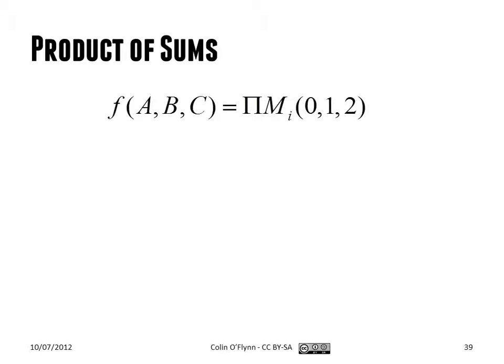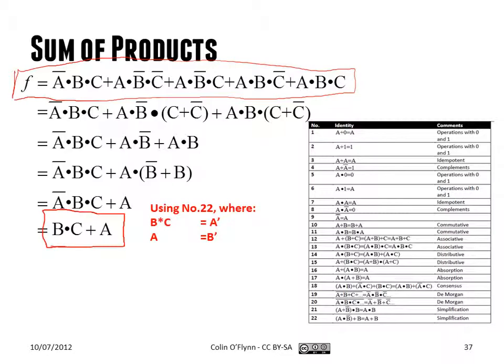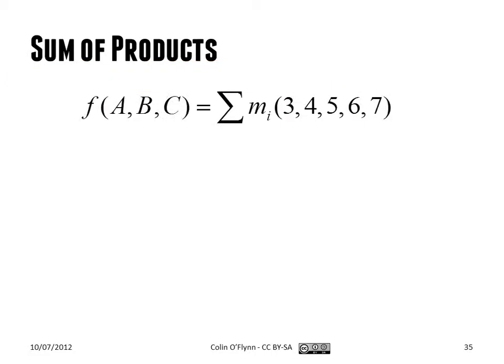When we write them down, we'll often use this simplified notation. The sum of products form, which is the first one we talked about, we'll use the summation notation. This, for example, is saying minterm 3, 4, 5, 6, 7. What this means is that in the truth table, this is the location of the ones where we have minterms 3, 4, 5, 6, 7.